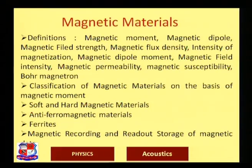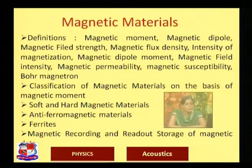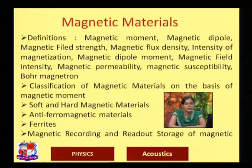We will just review the topics we are going to study in this chapter. We will study several definitions which are the basics of magnetism: magnetic moment, magnetic dipole, magnetic field strength, magnetic flux density, intensity of magnetization, magnetic dipole moment from a different point of view, magnetic field intensity, magnetic permeability, magnetic susceptibility, and most importantly Bohr magneton, which is a unit of magnetic moment.